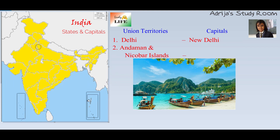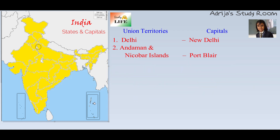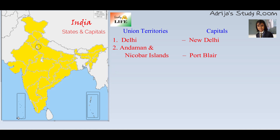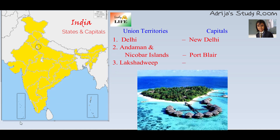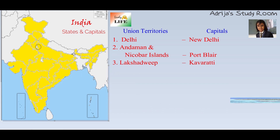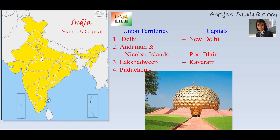Can you name these two island territories? This island is Andaman and Nicobar Islands, and its capital is Port Blair. And this island is Lakshadweep, and its capital is Kavaratti. These islands are also union territories of India. And over here, this union territory is Puducherry, and its capital is also Puducherry.